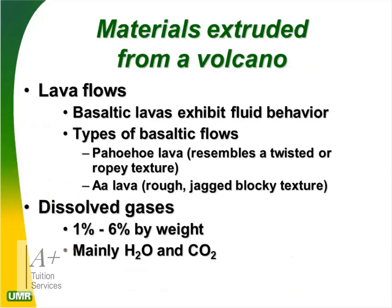The materials extruded from a volcano include lava flows. Basaltic lava exhibits fluid behavior — it's runny like water. Types of basaltic flows include pāhoehoe lava, which resembles a twisted ropy texture, kind of fluffy like slime except hot. There is also ʻaʻā lava, which has a rough, jagged, blocky texture with small stones.